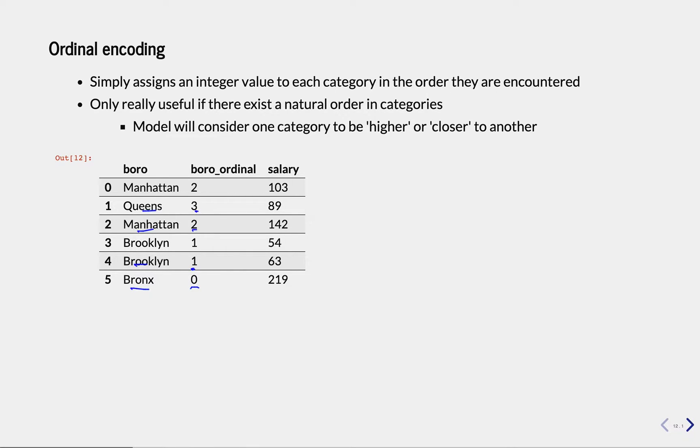And Queens, which is 3. Okay, so we just assign a number to every categorical value.